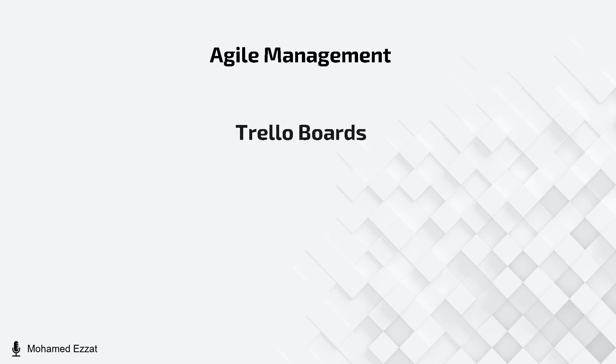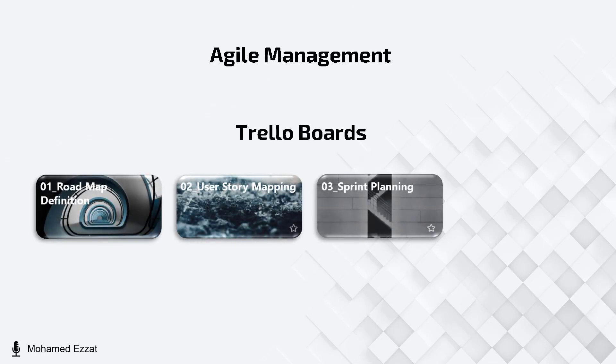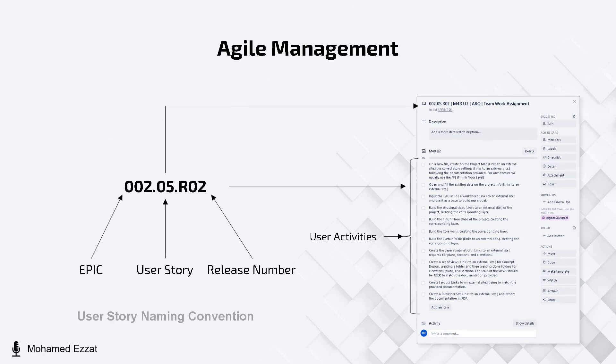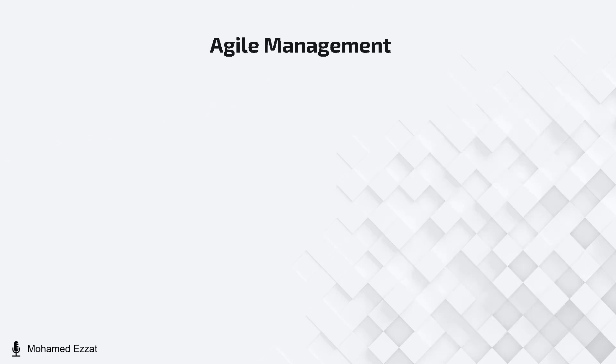Trello board was used to apply the agile approach, creating several boards defining the project roadmap, user story mapping, sprint planning, and the active sprint. Each user story had its own naming convention to easily be tracked across the different boards. The first three digits represented the epic number, the second two digits represented the user story number, and the last three digits represented the release number. The following images show our Trello boards created throughout the project.